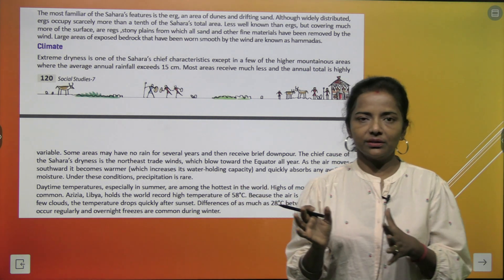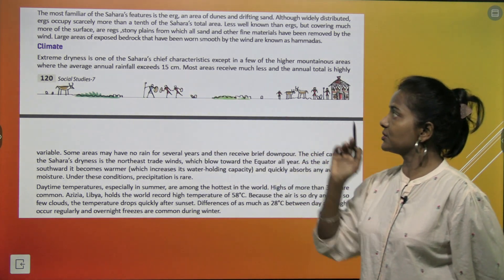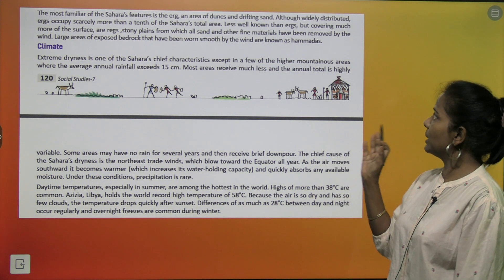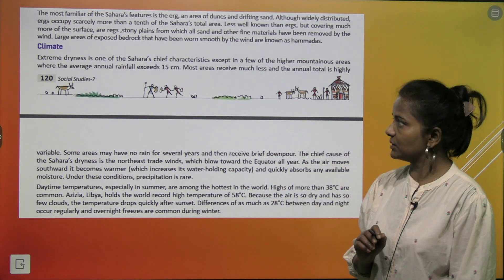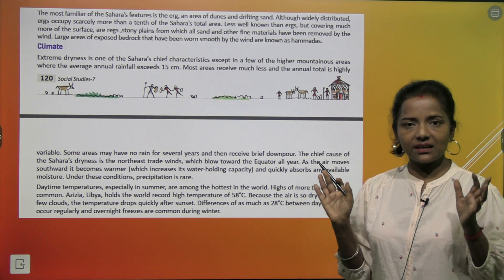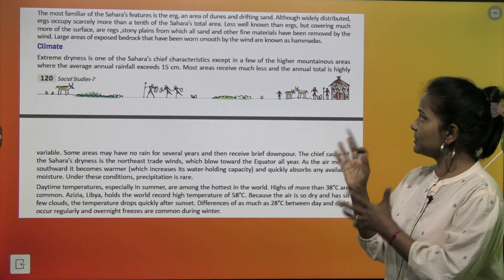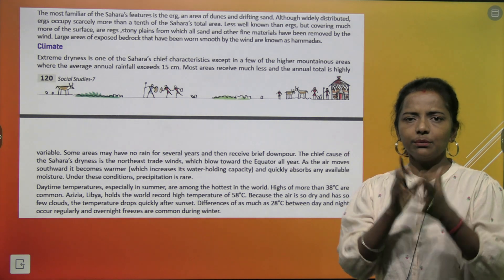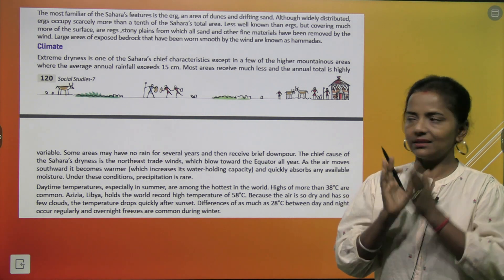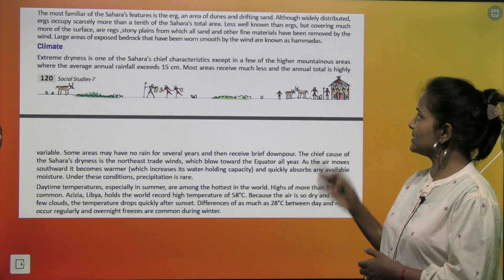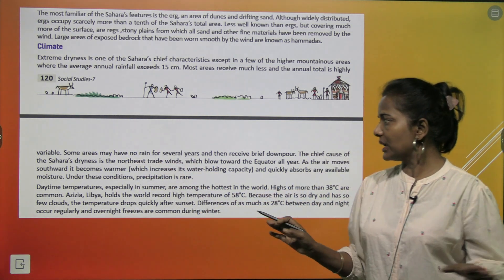The climate of the Sahara: extreme dryness is one of its chief characteristics. Except in a few of the higher mountainous areas where the average annual rainfall exceeds 15 cm, most areas receive much less and the annual total is highly variable. Some areas may have no rain for several years and then receive a brief downpour.